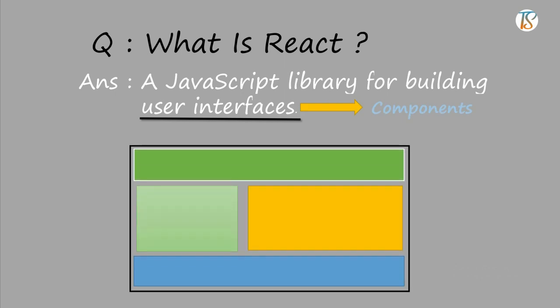Let's take an example. In a web page, we can have one header component, one sidebar component, one article component, and a footer component. We can divide a web page into as many components as we want, and these components are reusable.